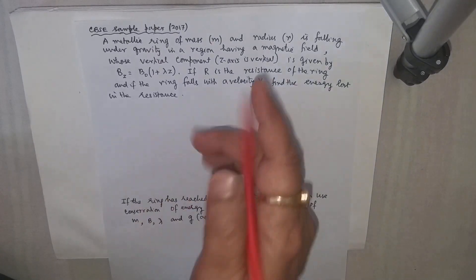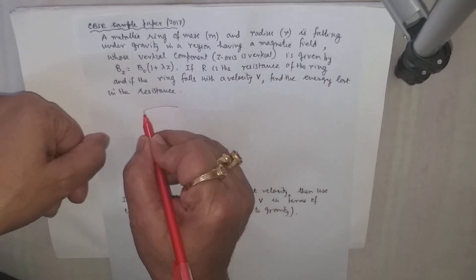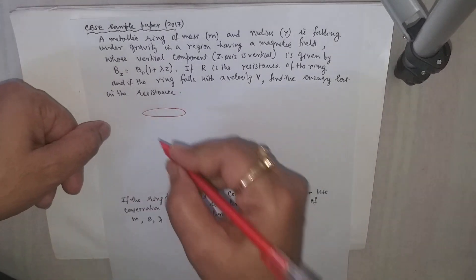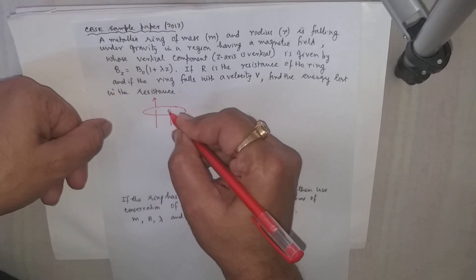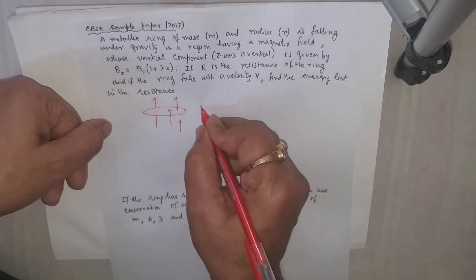Let's see the condition of the question. There is a ring and the ring is falling under gravity and there is an upward directed magnetic field.